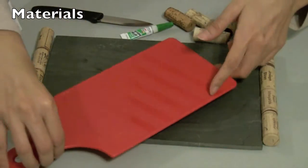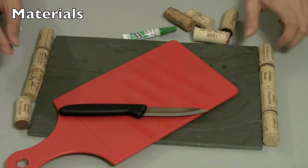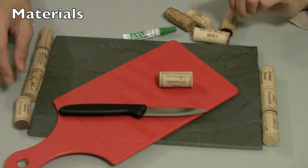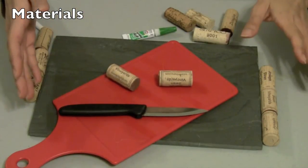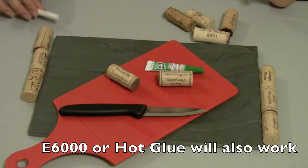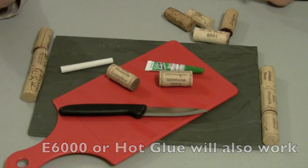We'll be using our cutting board, our knife, corks—we have enough corks to line the sides of our slate tile—and we'll also be using super glue. And optionally, you can use chalk to write on your cheese plate.